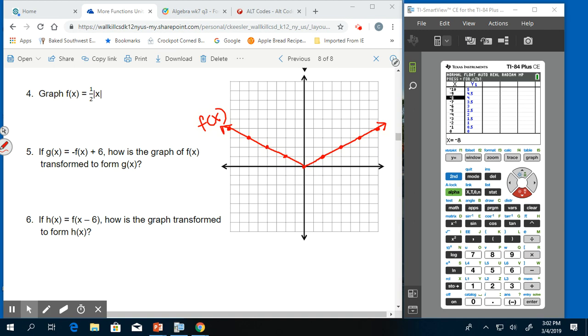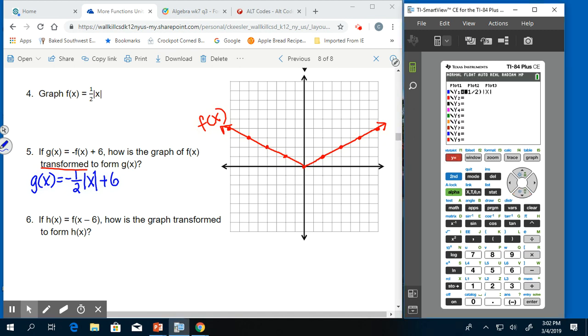So then for number 5, it says if g of x equals negative f of x all plus 6, how is the graph of f of x transformed to form g of x? So there's multiple transformations here that happened. We're going to see if we can figure out what they are by graphing. So we're going to negate our original f of x function. So g of x is negative 1 half absolute value x all plus 6. We put that into our equation, y equals. We can insert the negative, trying to avoid clearing the entire thing. Make sure you use a negative, not a minus. And then go over and add 6. Then pull up the table.